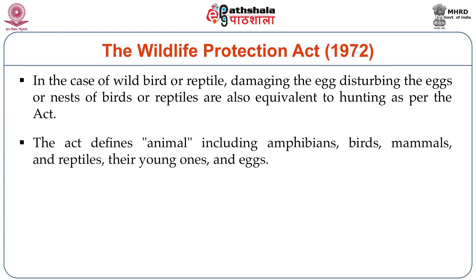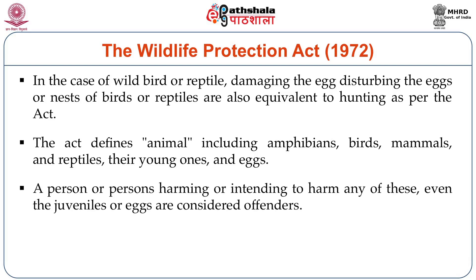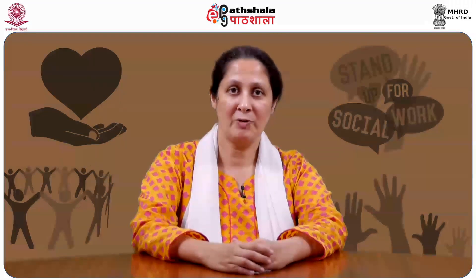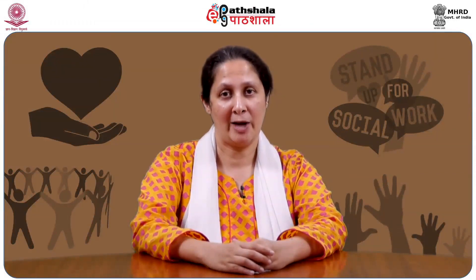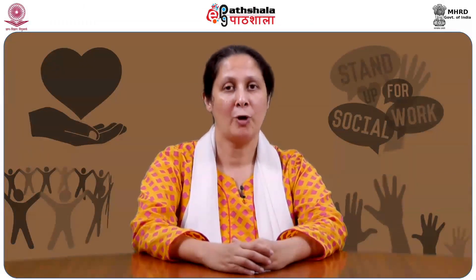Animals under this act include amphibians, birds, mammals, reptiles and their young ones or eggs. A person harming or intending to harm any of these, even juveniles or eggs, is considered an offender. This provision has been very important in recent times, as there is a rise in wildlife poachers taking away small animals or eggs from the wild and selling them abroad for the pet trade.